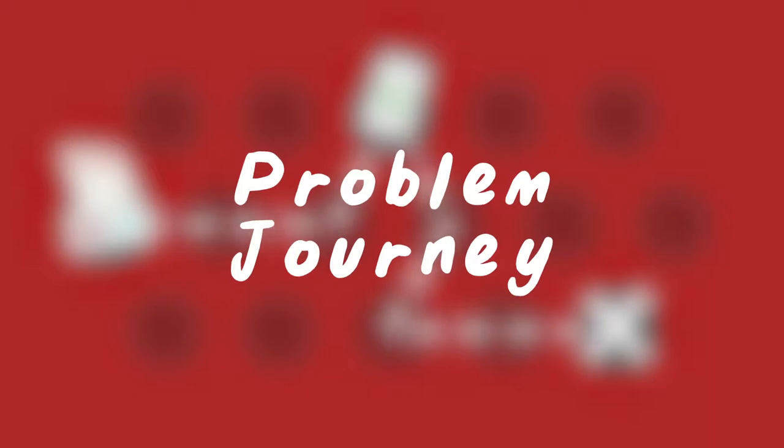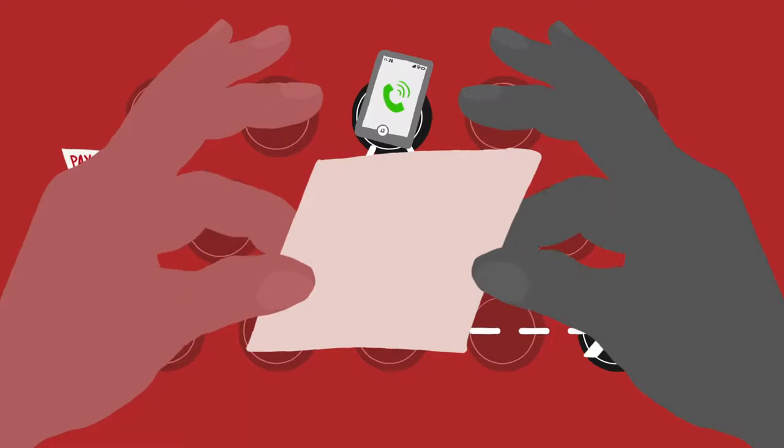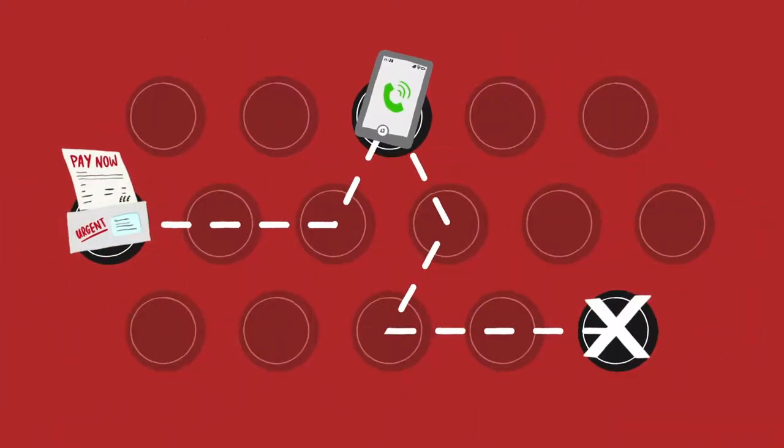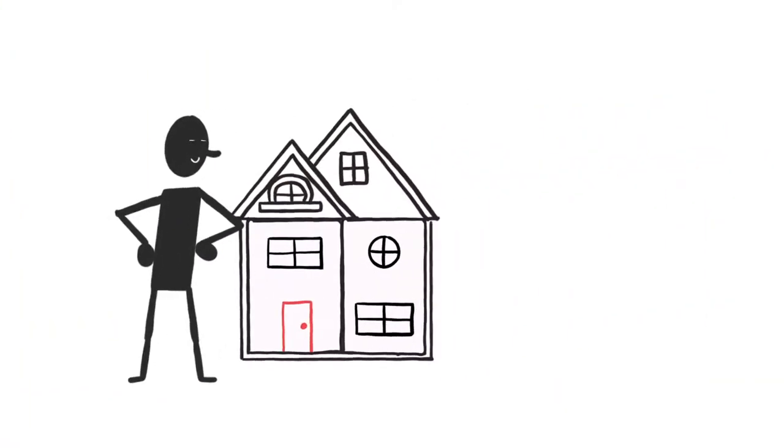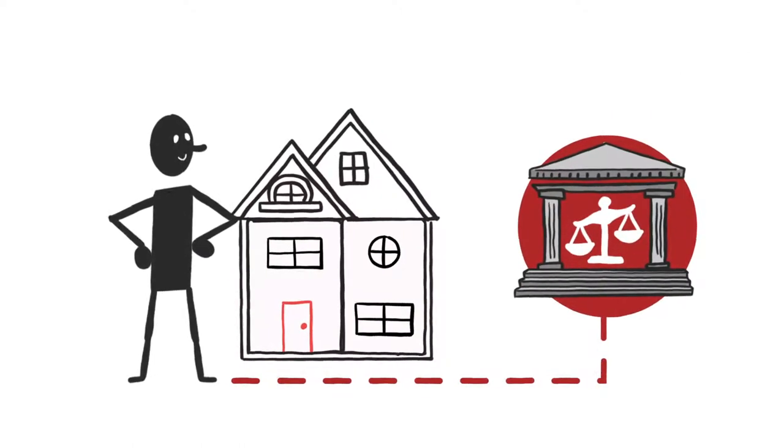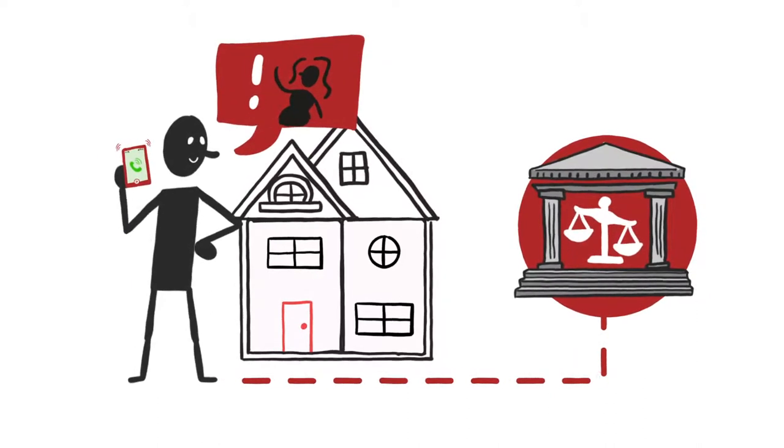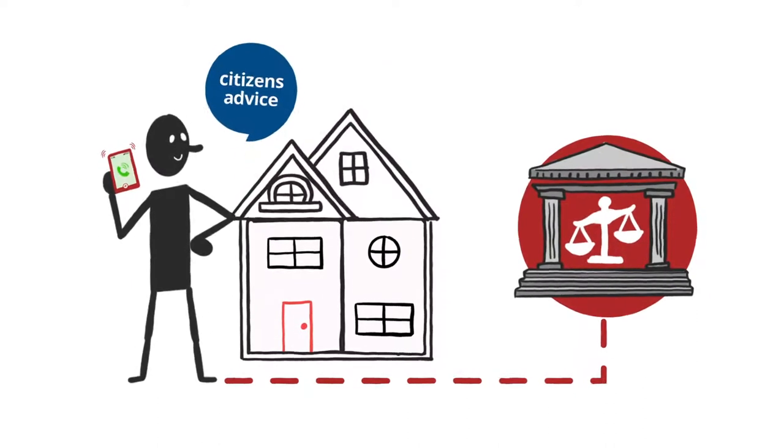Understanding the problem journey is important to demonstrate how services interact or hand over between each other. For example, whilst navigating a housing issue, someone can go directly to the courts or they might try to resolve the problem with their landlord personally before seeking advice from the Citizens Advice Bureau.